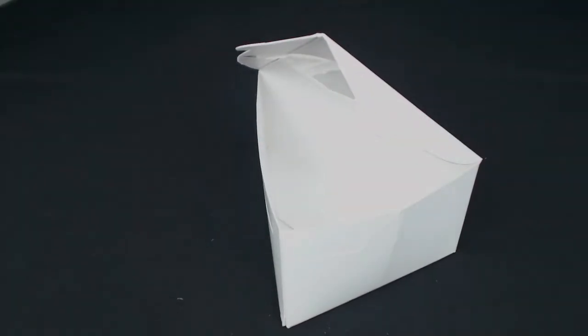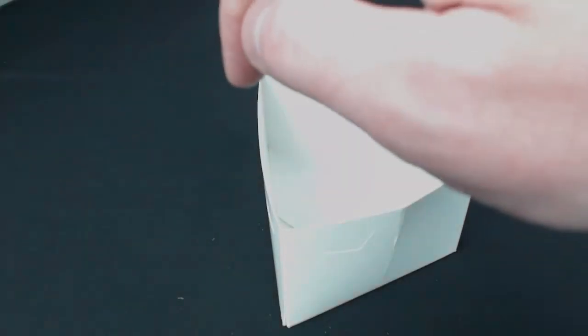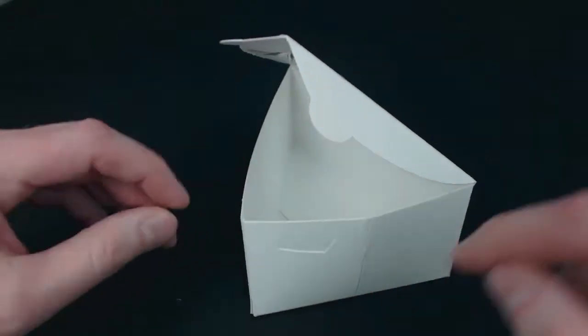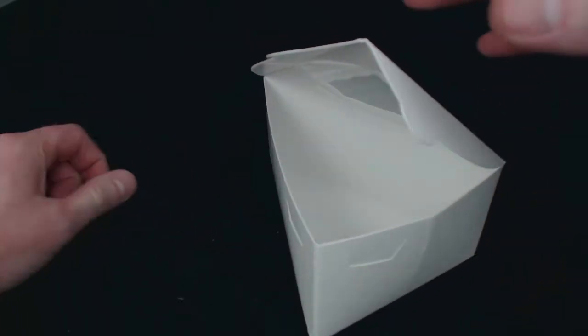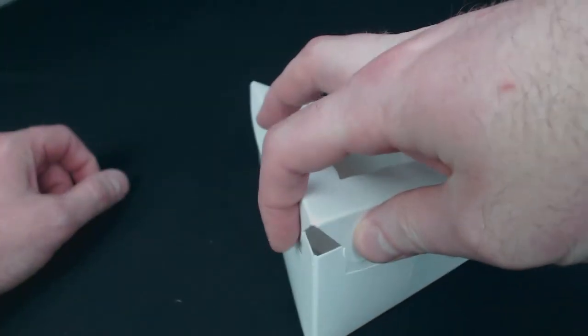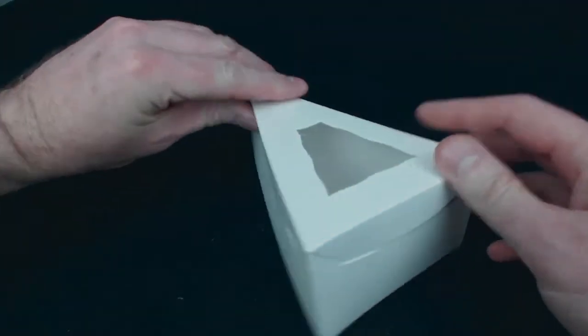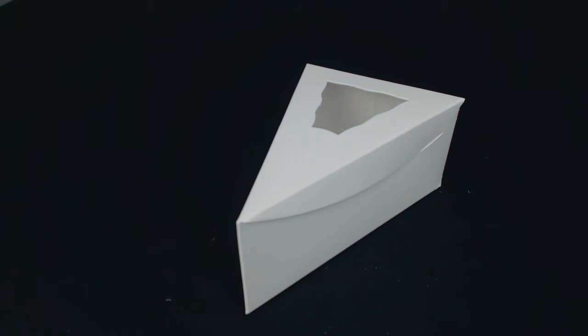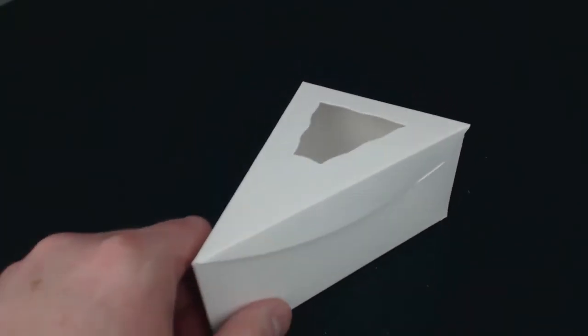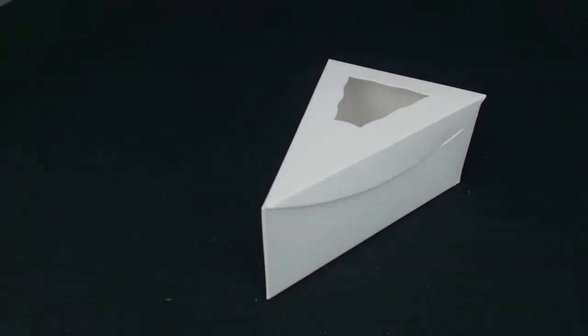Closing the lid is pretty simple. There's two tabs at the corners, and those tabs go into corresponding slots. You just use one hand, fold these down, and with the thumb and the finger, slide them in. And that is your pie slice box.